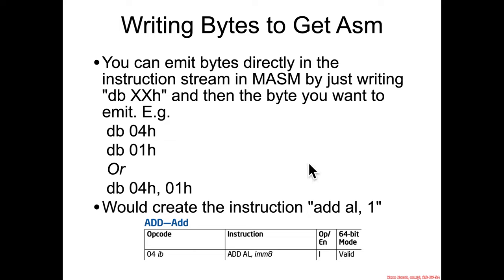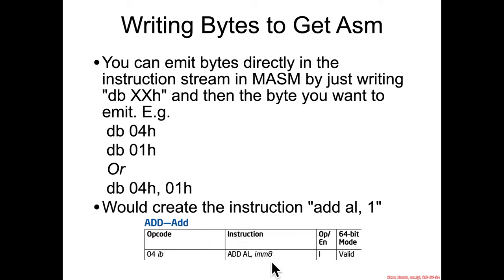The way that you write raw bytes in MASM syntax is you write DB for data byte, and then XX followed by H for hex. So DB 04H followed by DB 01H — or you can just put commas in between them on a single line: DB 04H, 01H. If you put this into your assembly file, it gets stuck into the assembly stream like anything else. When the CPU comes along and interprets that, it says: I see the number 4, that is the opcode for an add assembly instruction, and I'm going to expect a 1-byte immediate value followed, which will be added to the AL register.